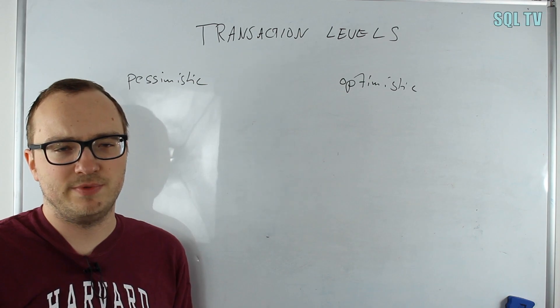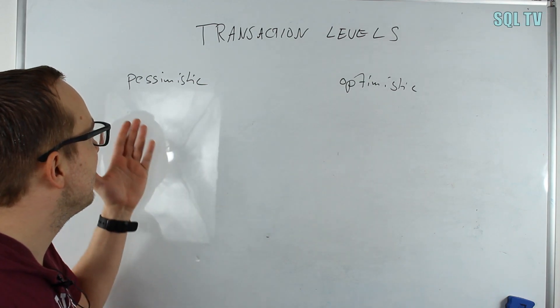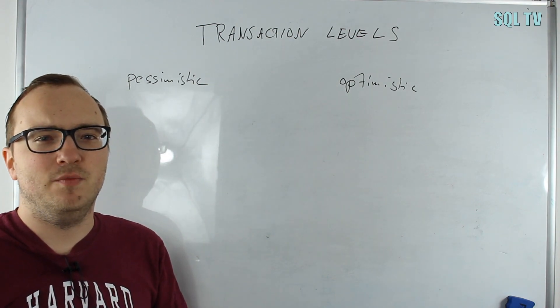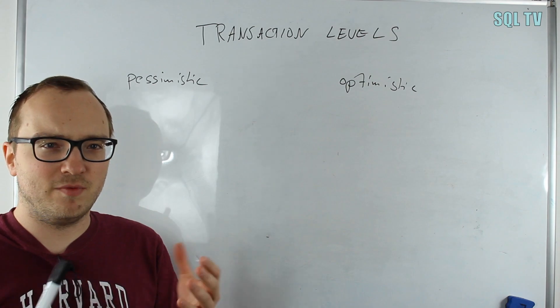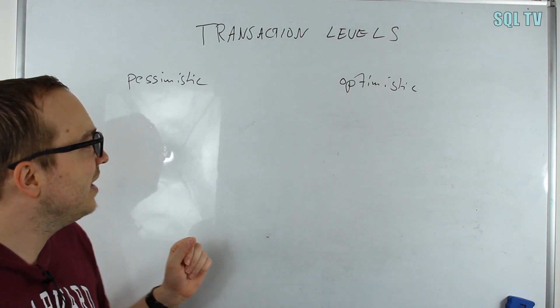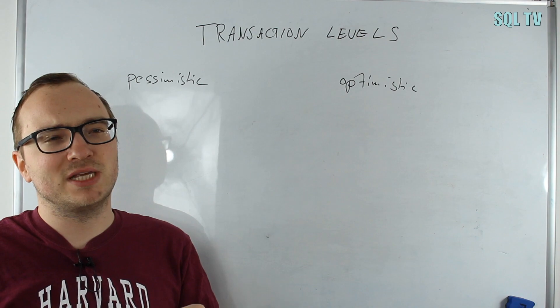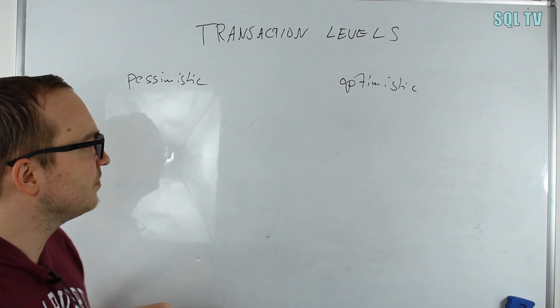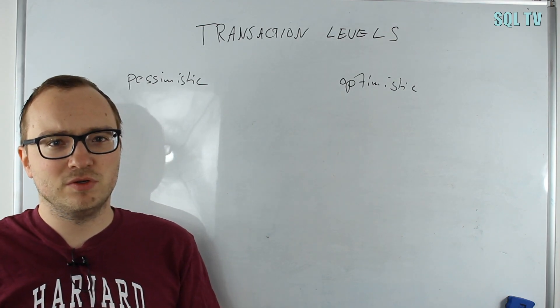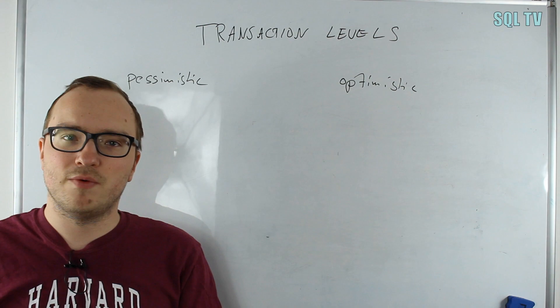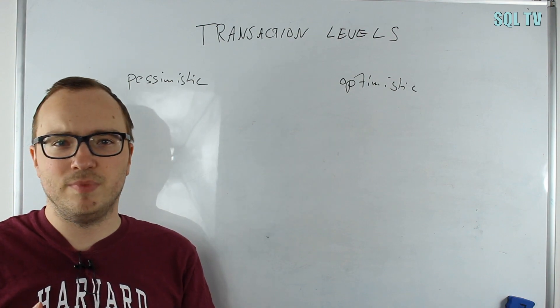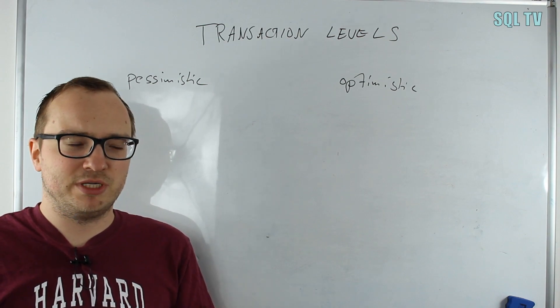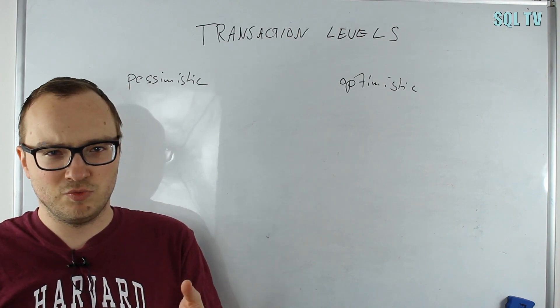You basically have two different types of transaction levels: pessimistic and optimistic. Pessimistic means we think we might block or lock each other with read and write operations, and optimistic means we think in most cases we don't really block writes with reads or the other way around. We also have transaction levels that fit into both categories. The transaction level just expresses what kind of phenomena you want and at what cost.